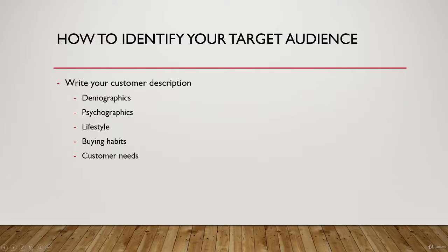The second factor is psychographics — values, attributes, and belief systems. For example, if you start putting hate signs on your t-shirt or things that can hurt the feelings of the general population, it's not going to work and you will not make sales, because it goes against the values and belief systems of the majority of people.